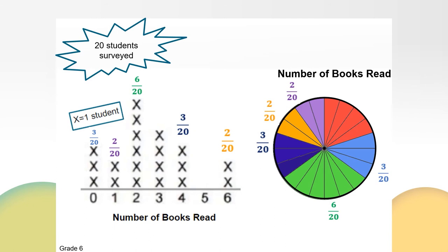I can see that no students read 5 books because 0 out of 20 students read 5 books, so I don't need to represent that on my circle graph. Let's make sure that the data is represented accurately. If I find the sum of all my fractions, I can see that I have data for all 20 students, because 20/20ths is equivalent to the one whole in my circle graph. So now I see how this data could be represented on a circle graph.